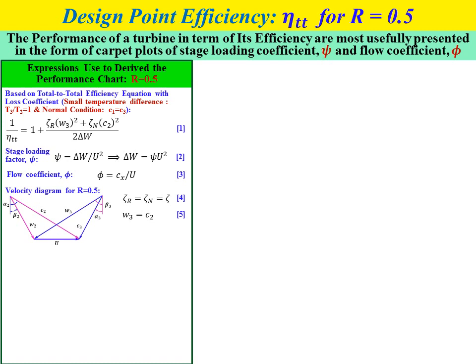Flow coefficient psi equals Cx over U, equation number 3. For the velocity diagram with R equal to 0.5, we get a symmetrical velocity diagram. For the symmetrical case, the loss coefficient in the rotor equals the loss coefficient in the nozzle: Zeta_R equals Zeta_N equals Zeta, equation number 4. In terms of velocity vectors, W3 equals C2, equation number 5. From trigonometry using the blue triangle: W3 equals Cx divided by cos(beta3), equation number 6. Squaring equation 6 gives W3 squared equals Cx squared times (1 plus tangent squared beta3), equation number 7.